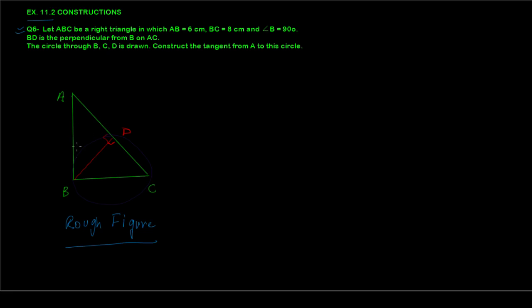Here is the rough figure where I've drawn triangle ABC and dropped the perpendicular BD on AC, and through B, D, C we've drawn a circle. To draw the circle through BDC, we need a center. The center is going to be the midpoint of BC — call it O. So O is the midpoint of BC, meaning OB = OC = OD, and that's going to be our center.